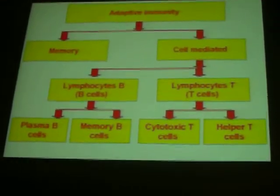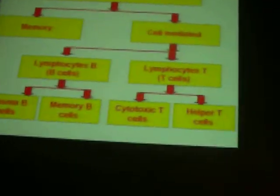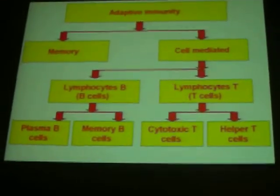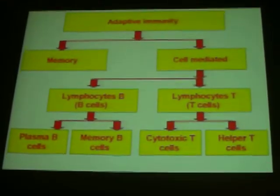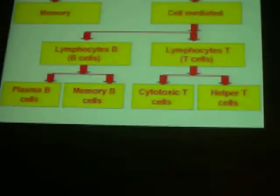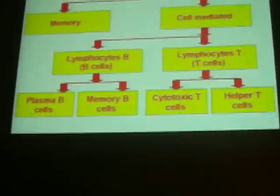Adaptive immunity includes memory, humoral, and cell-mediated responses. Cell-mediated immunity involves B lymphocytes and T lymphocytes. B lymphocytes are classified into plasma B cells or memory B cells. T lymphocytes are classified into cytotoxic T cells and helper T cells. Immune testing was successful across three areas: humoral immunity, cell-mediated immunity, and phagocytosis. These three areas are relatively independent and genetically under control.